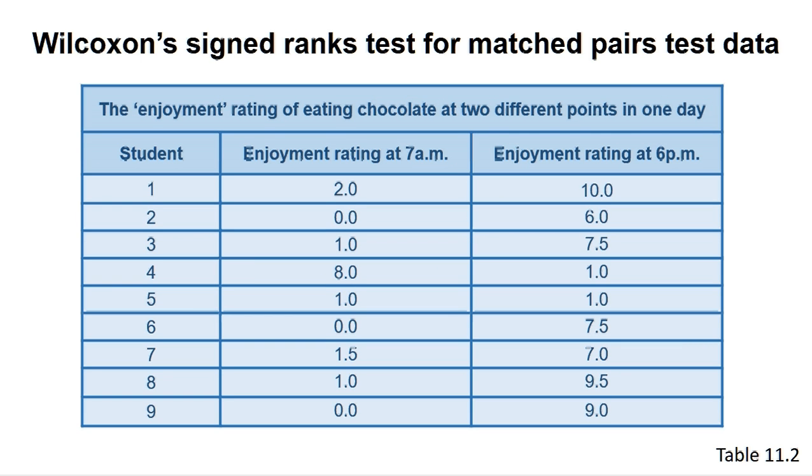The Wilcoxon's signed ranked test for matched pairs is performed on two samples where the same individual is measured twice under different conditions. In this case, our data concerns self-assessed enjoyment of chocolate at two times of the day. Each individual is measured twice, with their self-assessed enjoyment rating of chocolate at 7am included in the data for the first sample, and their rating from 6pm included in data for the second sample. This type of data is said to be matched or paired. This data can be found in table 11.2.